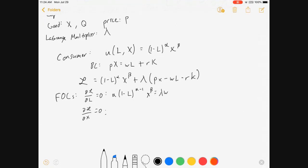All right, next bit. For the derivative with respect to X, beta 1 minus L to the alpha X to the beta minus 1 equals lambda P.